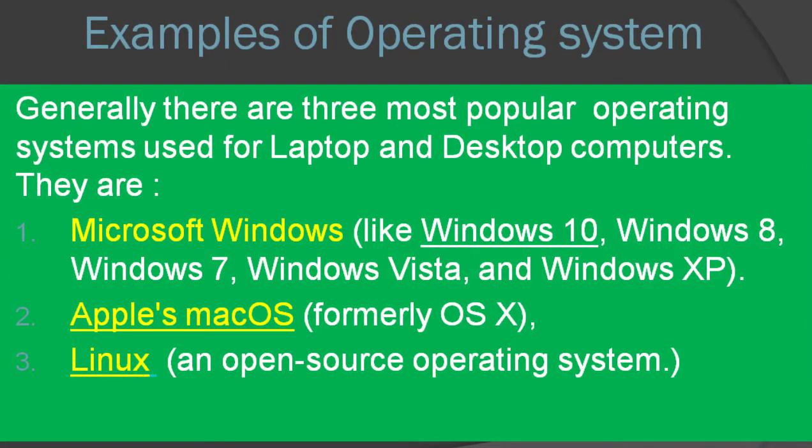Examples of operating systems include Windows 10, Windows 8, and Windows XP — these are earlier versions. There is also open source operating system, where open source means freely available.